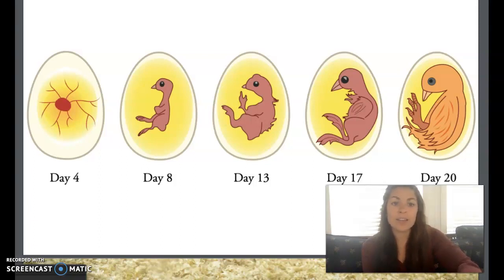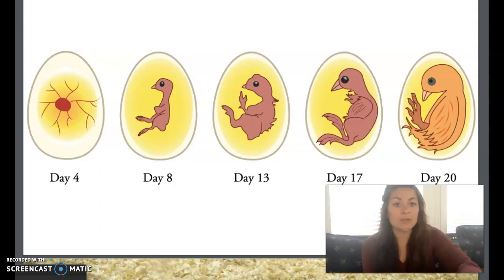The part of the egg inside the shell contains all the food the growing embryo needs to develop into a fully formed chick. The yellow yolk provides the food necessary for the embryo to grow big and strong. The clear part of the egg, or albumin, surrounds the yolk and provides the growing embryo with more food and water.